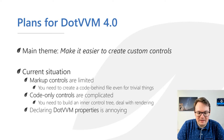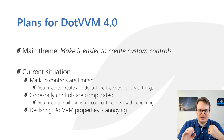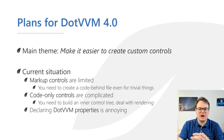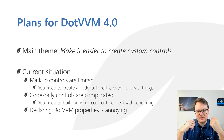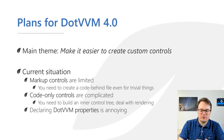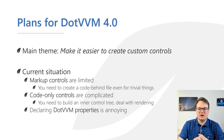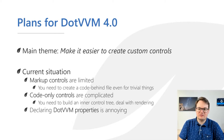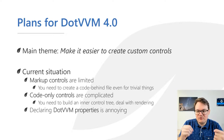Let's see what plans we have for the next major release: .vvm 4.0. We always try to have some kind of main theme for each major version. For version four, the topic is to make it easier to create custom controls. .vvm has supported creating your own controls from the first versions, but in versions two and three we didn't change much about this process, and looking back it's not very straightforward — there's quite a steep learning curve.